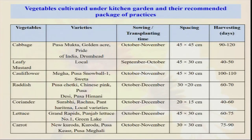There are also cabbage, leafy mustard, cauliflower, radish, and coriander — with different types of spacing recommended. Some vegetables — if you want to harvest very quickly — you should go for leafy vegetables. Coriander can be harvested in one month, leafy mustard in one month, amaranthus in one month, but for brinjal or tomato you may have to wait three to four months. According to choice, according to your family members' preferences, you have to decide different types of vegetables and know the different scientific organic management practices for them.